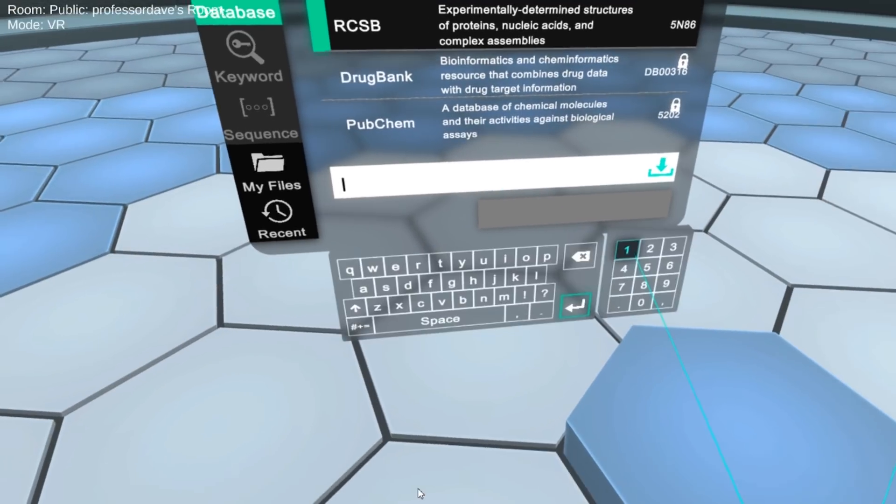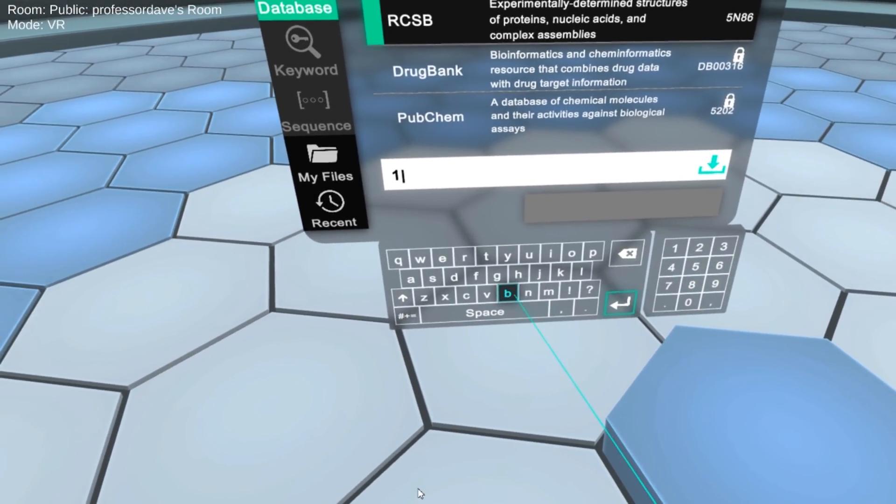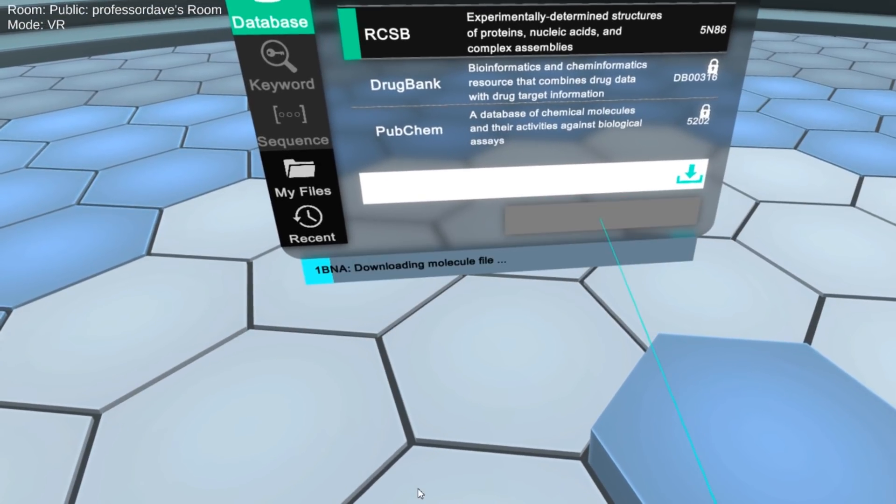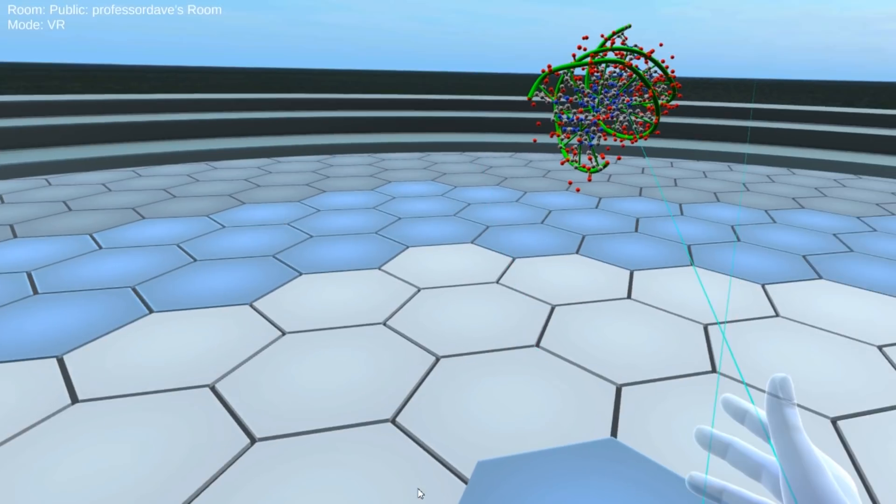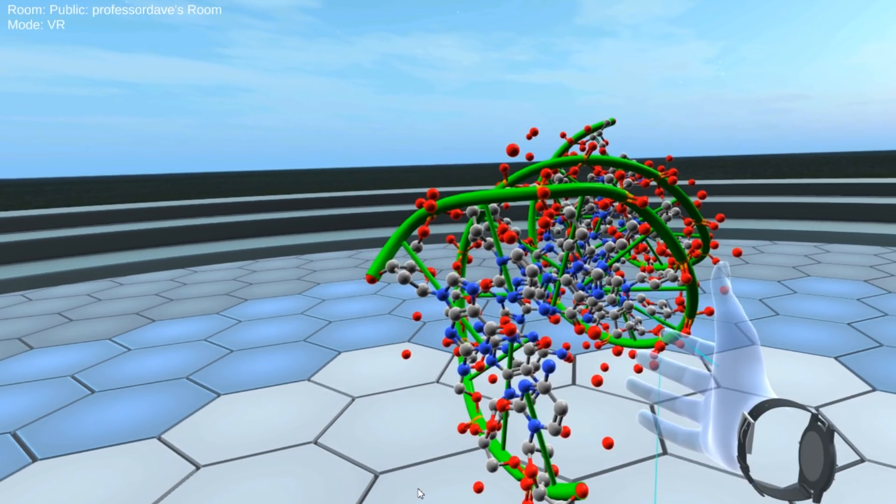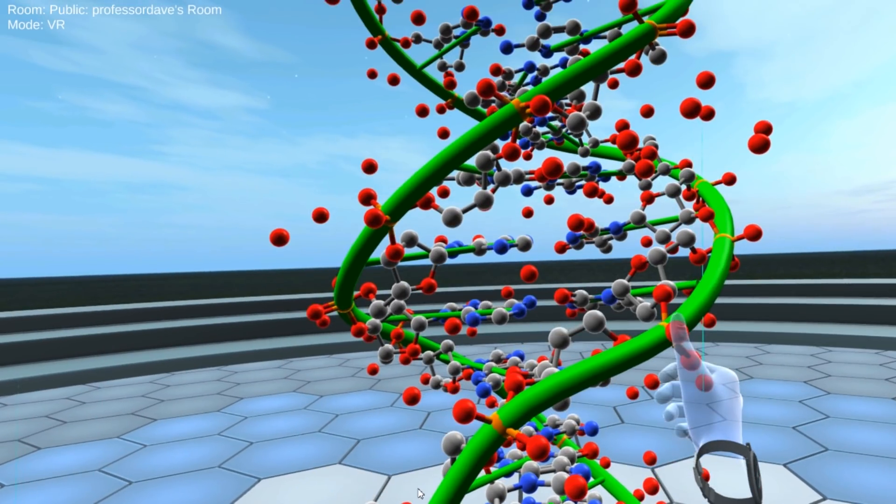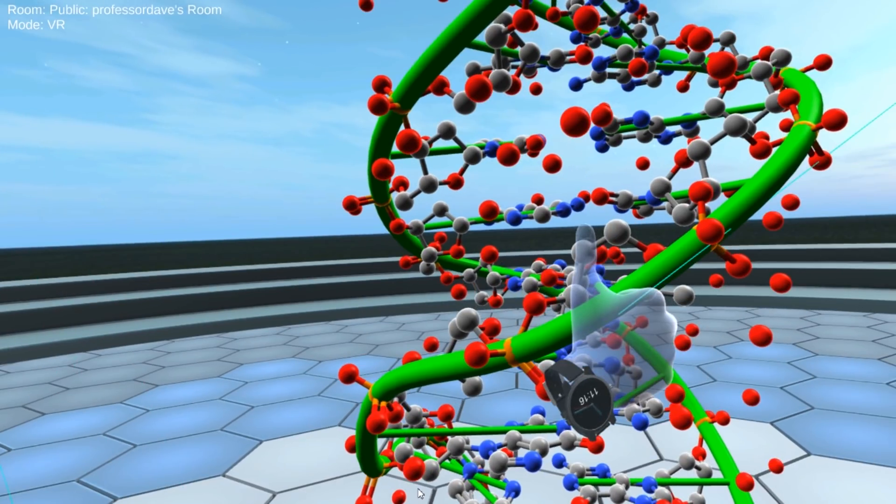So let's go ahead to our RCSB database and let's type in 1BNA. What could that be? Let's take a look, upload it. And so we've got some DNA. Specifically, this is a dodecomer of BDNA, which means we're looking at 12 base pairs of DNA.